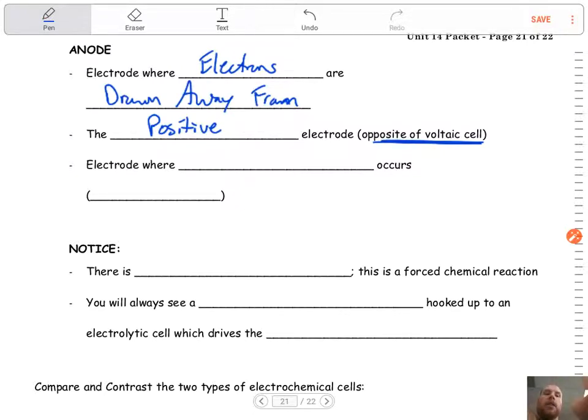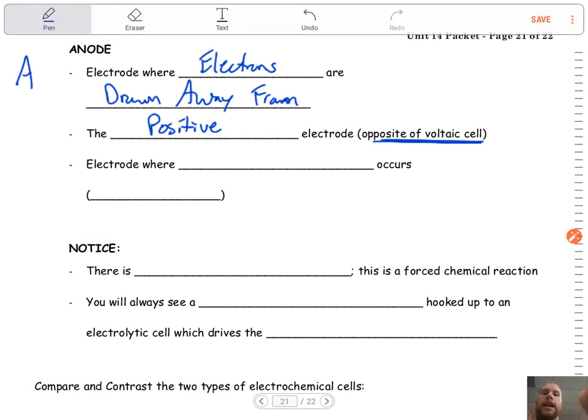Again, it's the opposite of a voltaic cell. Well, anodes are the negative cell in a galvanic or voltaic cell. Here, they're positive. So you've got to remember that. Still, though, anox is our thing we want to keep track of. This is still where oxidation occurs.